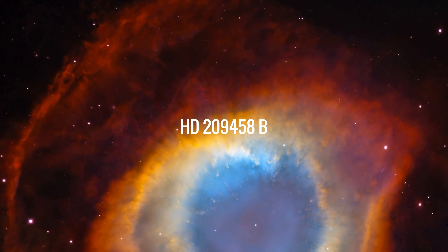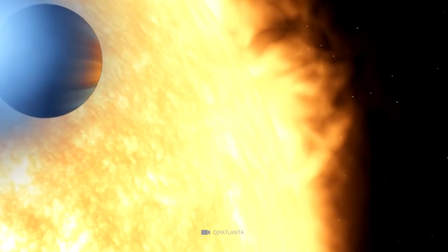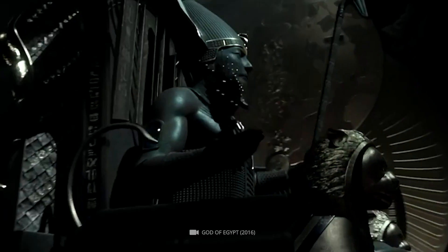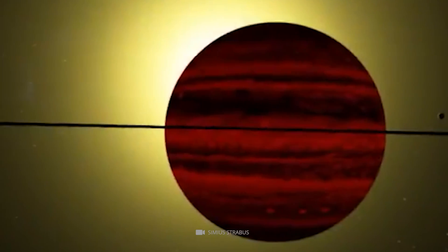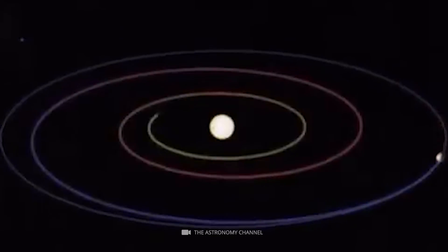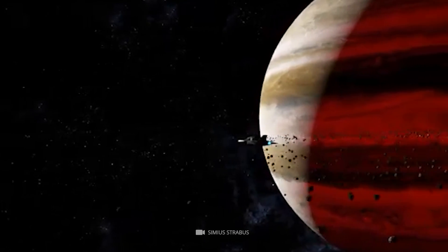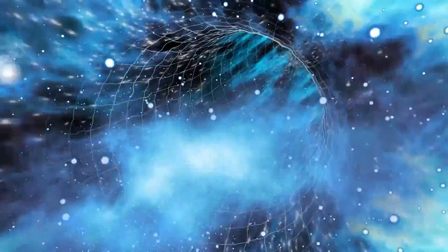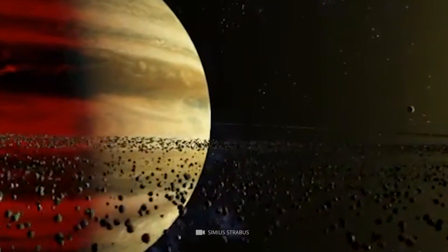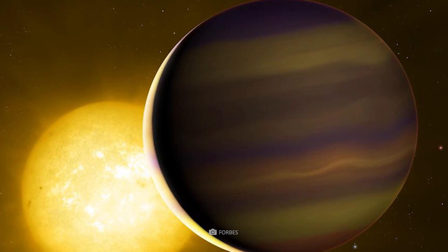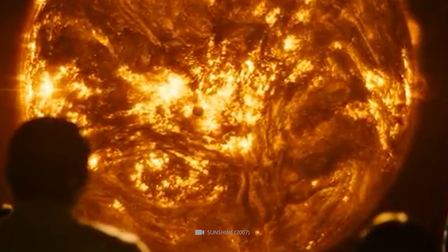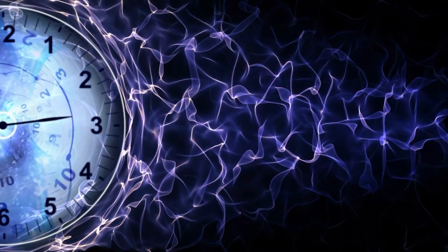HD 209458b, also known as OSIRIS after the Egyptian god, is a gas giant exoplanet orbiting around a sun-like star, HD 209458, in the constellation Pegasus. This planet is about 159 light-years away from us and has an orbital period of 85 hours, making it one of the quickest orbiting planets ever discovered. The radius of its orbit is 0.047 AU, one-eighth of the radius of Mercury's orbit. It was discovered by Michael Mayer and his colleagues on September 9, 1999.